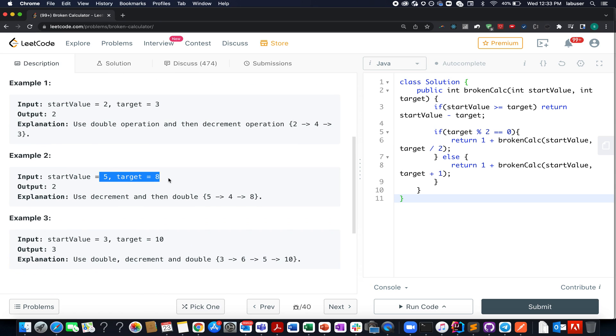Here the start value is 5, target is 8. What do we do? We subtract 1 from 5 and multiply it with 2. So we reach 4 and then 4 into 2 gives us 8.